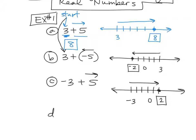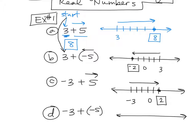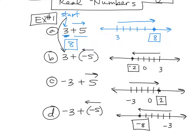Last one — any guesses what this question is going to look like? Negative 3 plus negative 5. So for this one, again, you're starting at negative 3, but we're going to the left. Put your negative 3 over here. And then plus a negative 5: 1, 2, 3, 4, 5. That's a negative 8 that we end up at. So negative 3 plus a negative 5 is negative 8.